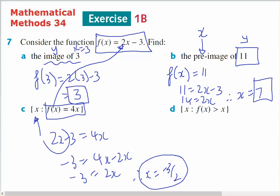And lastly, part d, find x where f(x) is bigger than x. So I want 2x minus 3 is bigger than x. Therefore I've got 2x minus x is bigger than 3. So what have I done there? I've moved the negative 3 to the right hand side and it became 3. I moved the x to the left hand side and it became negative x and the 2x stayed where it was. Therefore I've got x is bigger than 3 will be the solution to that.